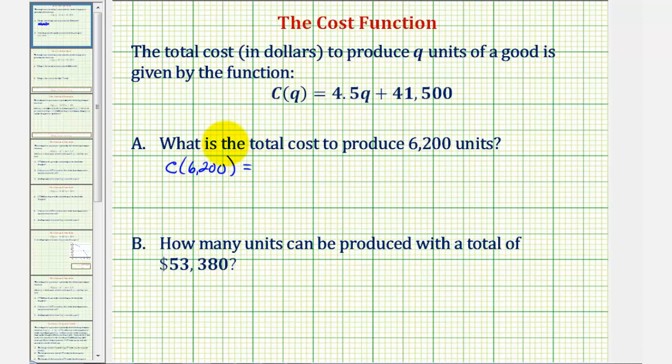We'll substitute 6,200 for q here on the right. So we have 4.5 times 6,200 plus 41,500. 4.5 times 6,200 is 27,900.